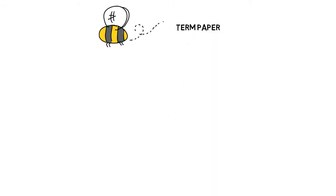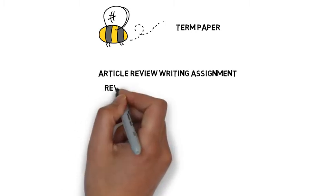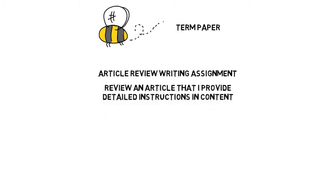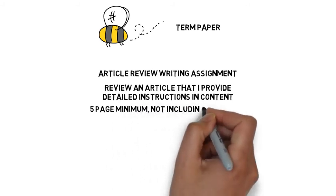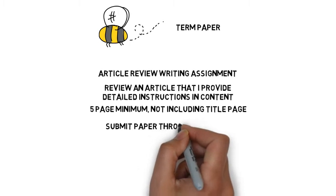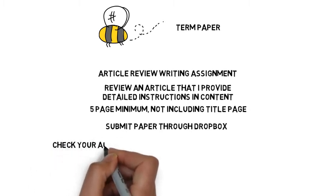Your term paper is called the article review assignment. I'll provide you with six articles, from which you will choose one to review. Your paper is required to be at least five pages, not including the title page. You'll use the Dropbox to submit your paper. Remember that Front Range has a zero tolerance policy on plagiarism, so be sure to check your authenticity score through Dropbox — it should be no lower than 80% authentic.